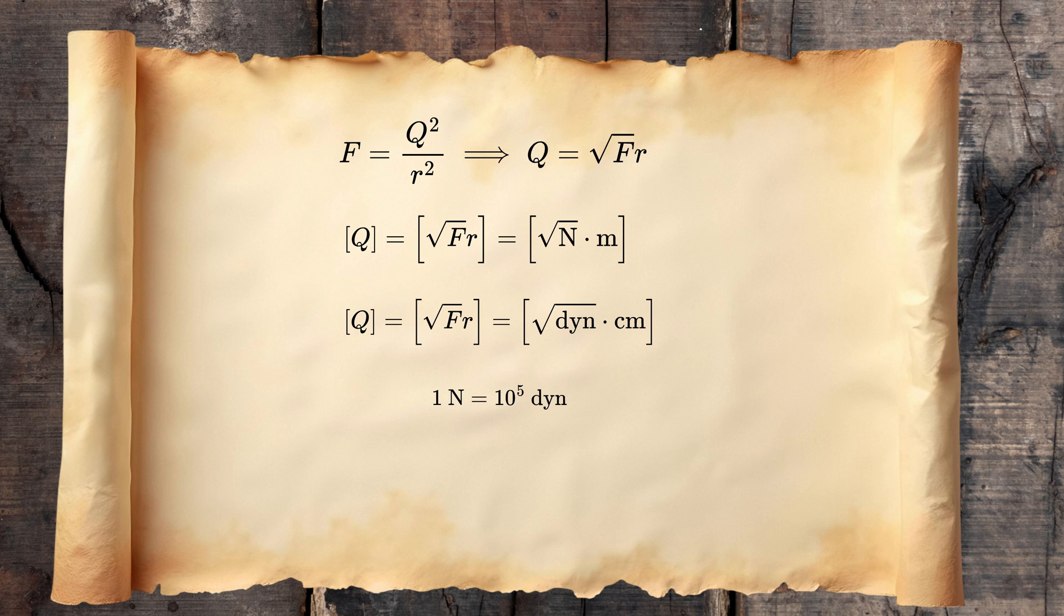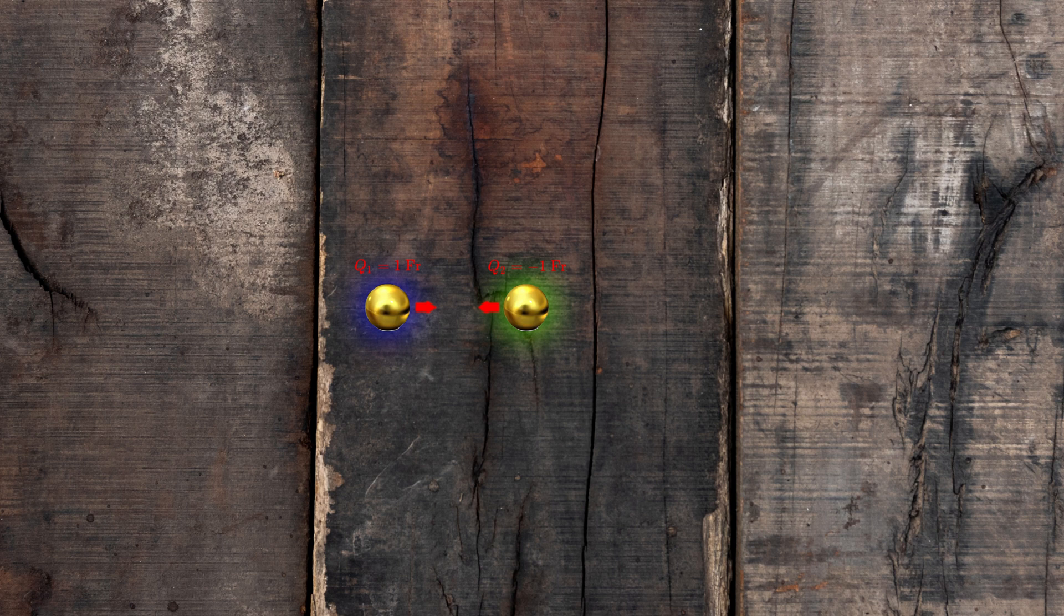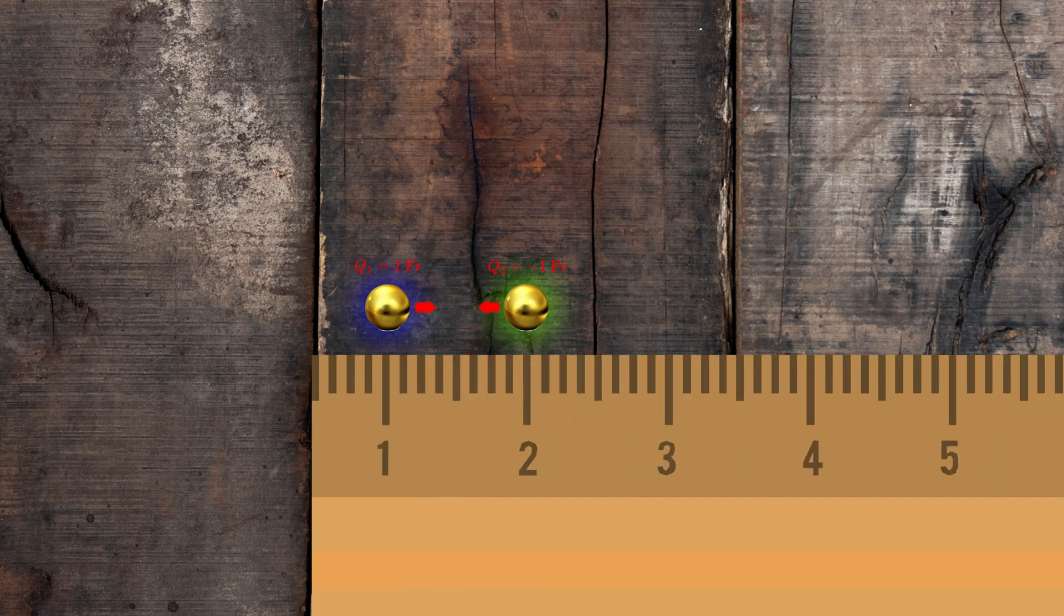And it's called by three different names: Franklin, Statcoulomb, or ESU. And the system of units is called the Gaussian CGS units. So in translation, if you have two electric bodies charged at one Franklin separated by one centimeter, then they will act with a force of one dyne on each other.